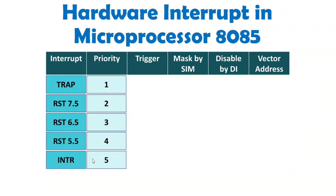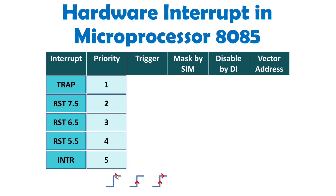Now I will explain how all these interrupts are triggered. Before that, you should have some basic knowledge regarding triggering signals. You can see the signal going from low to high. When the signal goes low to high and remains high, the arrow indicates the triggering location. Whenever you have an arrow with logic high remaining continuously, this is a level trigger — because whenever it is at logic 1, it will get triggered.